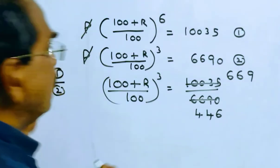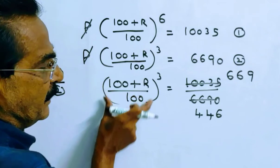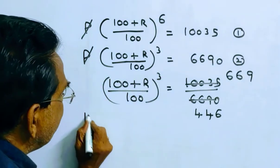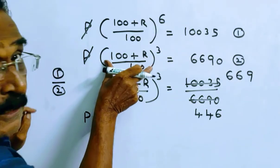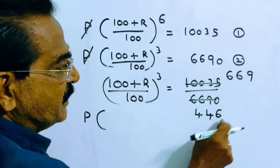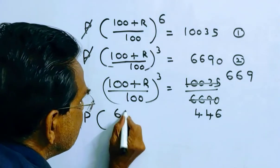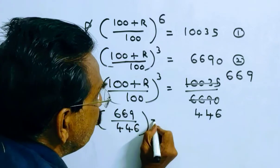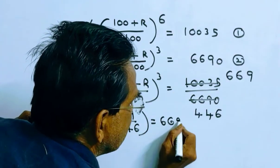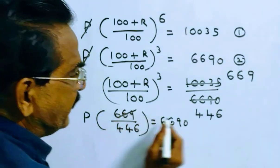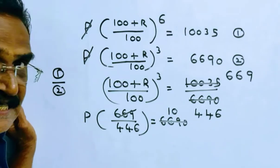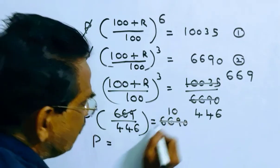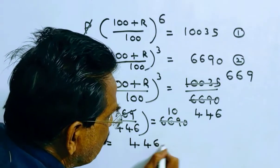Friends we want P. Let us substitute 100 plus R by 100 whole cube value in the second equation. P into 100 plus R by 100 whole cube is equal to 669 by 446. This is equal to 6690, 669 tens. So P is equal to 446 into 10, that is 4460.